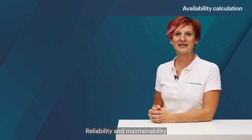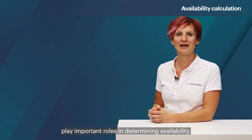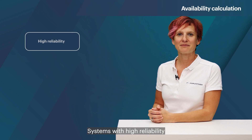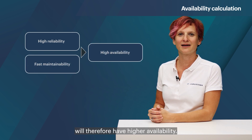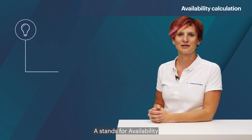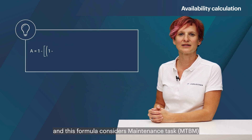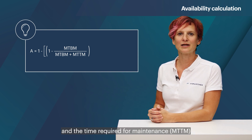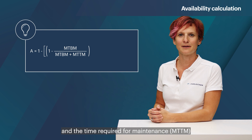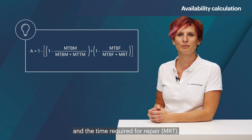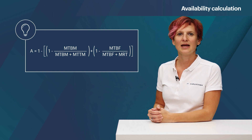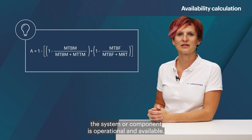Reliability and maintainability play important roles in determining availability. Systems with high reliability and fast maintainability will therefore have higher availability. The availability formula considers maintenance task interval MTBM and the time required for maintenance MTTM, as well as the time between failures MTBF and the time required for repair MRT. It provides the percentage of time the system or component is operational and available.